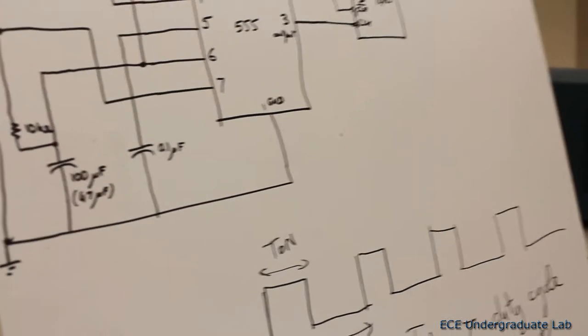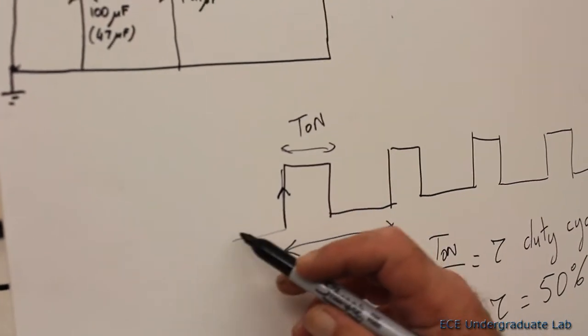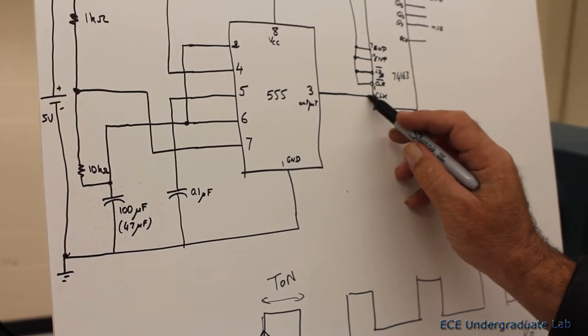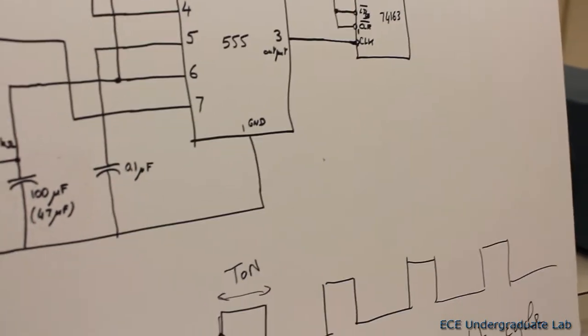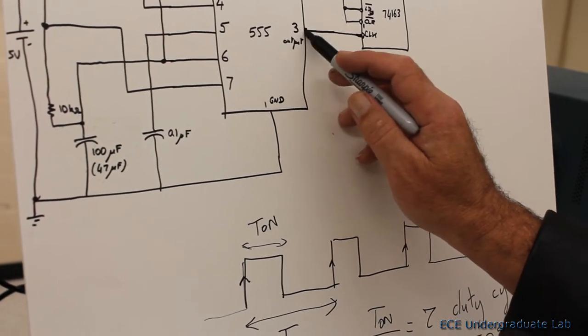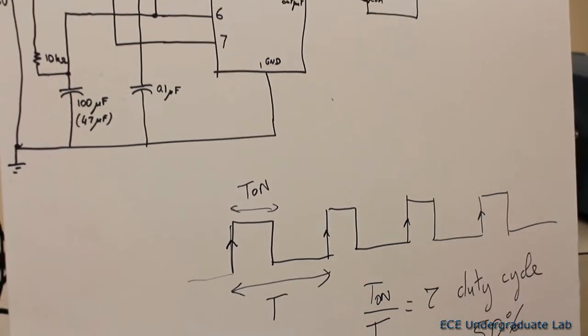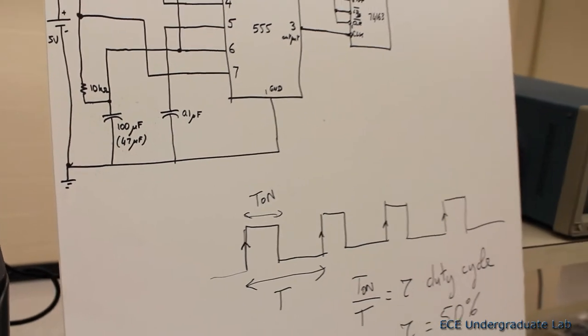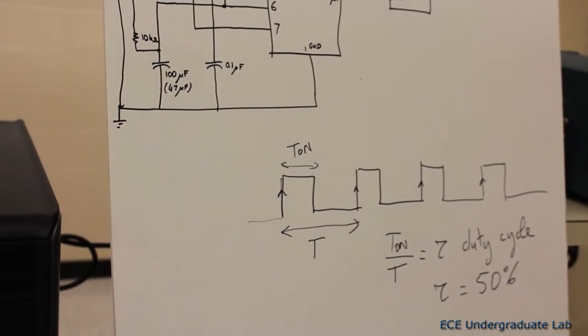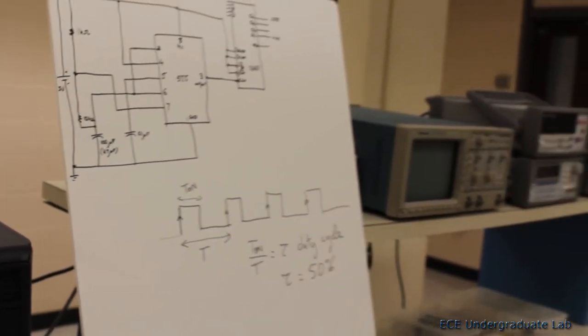In our case, we're going to make the duty cycle about 50%, which means the time when the signal is on is equal to the time when the signal is off. This counter relies on a transition and will count every time the signal goes from low to high. You see this little triangle with no bubble, that means low to high transition controls the count. It's a 4-bit binary counter that counts from 0 to 15 and back to 0, and it keeps going forever until you turn off the power.